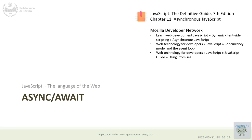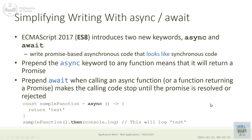Async and await are new keywords in the language that will let us use promises in a simpler way from the syntax point of view. These two keywords were introduced in 2017, a couple of years after the big JavaScript revolution.